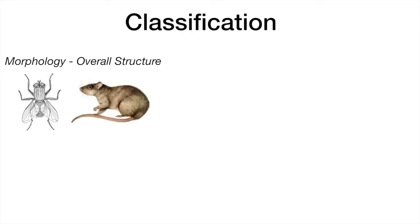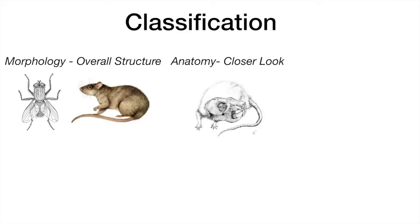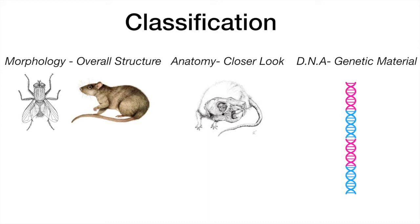Classification is carried out in three main ways: through morphology, which is based on the overall body structure — for example, to check if an organism has wings or not. Anatomy is a detailed body structure determined by dissection. Organisms can also be classified based on the base genes of DNA, that is A, C, G and T.